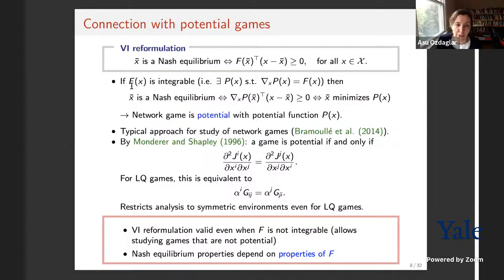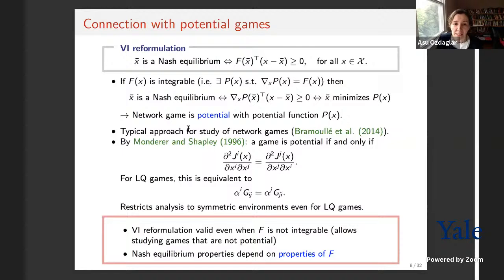This is exactly the special case where the network game is a potential game with potential function p(x). This is the typical approach used for studying network games: making assumptions on game primitives under which the game is a potential game. But this may be restrictive. By the Monderer-Shapley result, a sufficient condition for a game to be a potential game — under the smoothness assumptions imposed — is that cross-partials of payoff functions J_i and J_j are equal.